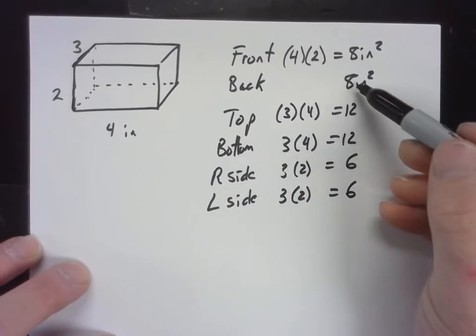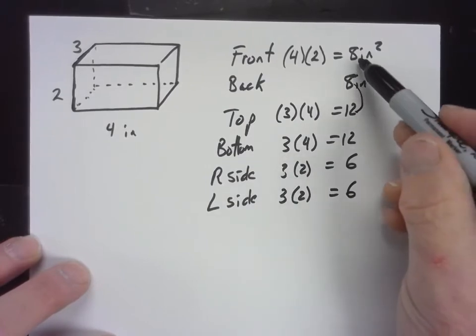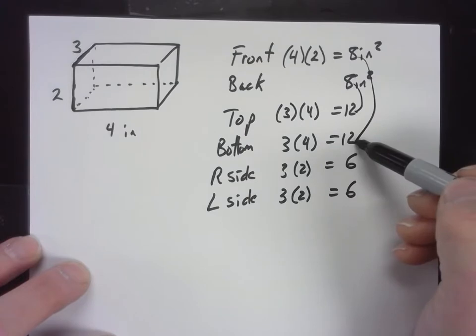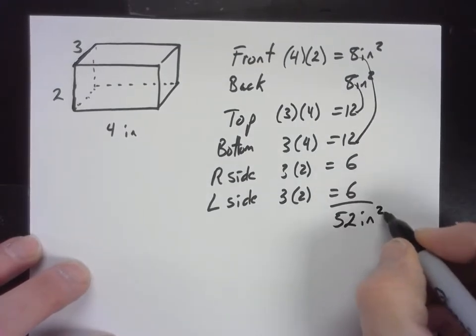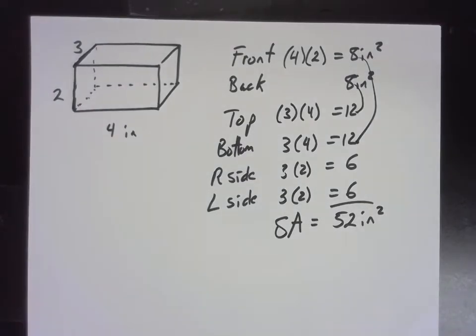And if we add these up, this gives me 20. And another 20, that's 40. And 12 more, that's 52. And remember, it's surface area, so it has to be square inches, doesn't it? So it's just simply the area of all the faces added together. That's surface area.